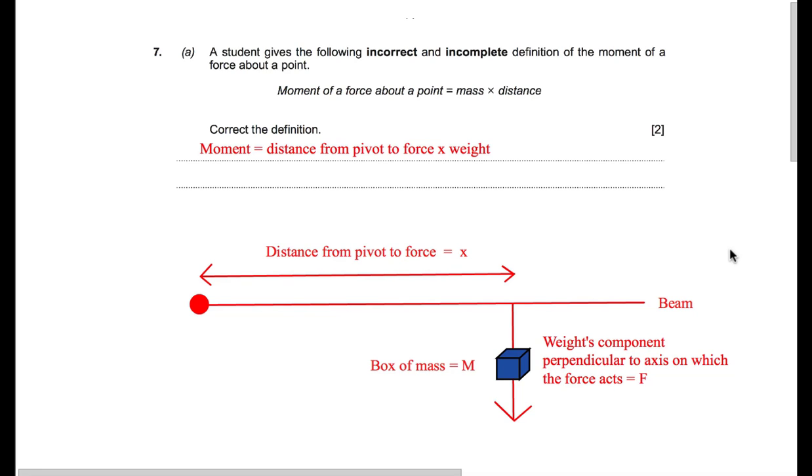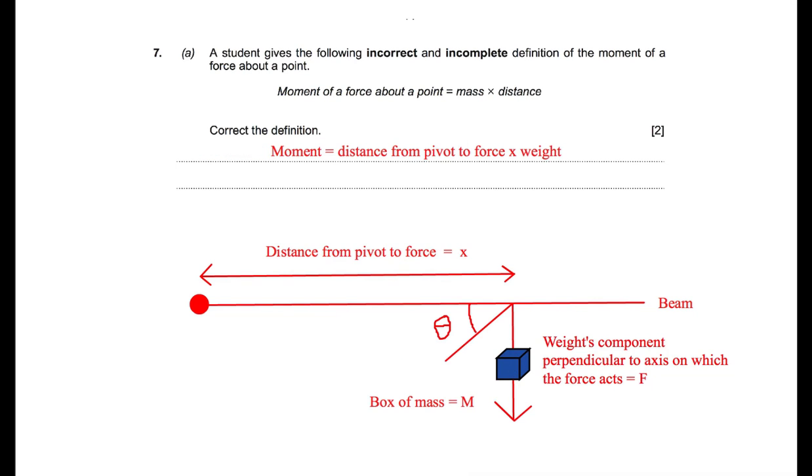One thing else that we need to consider is what happens if the box is actually at an angle. If there's a force acting at angle theta, then we need to consider a different component of distance. The component of distance that we consider is the perpendicular line connecting the force to the pivot. This is called the moment arm.